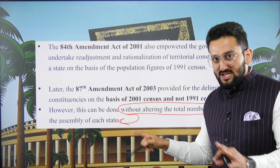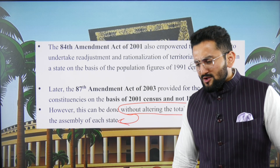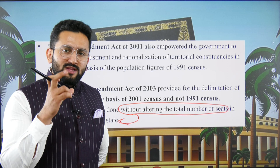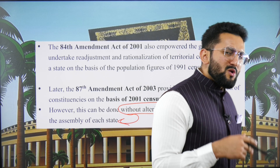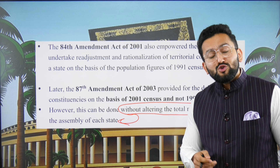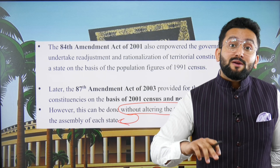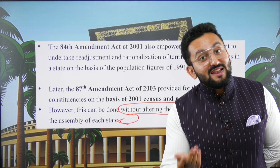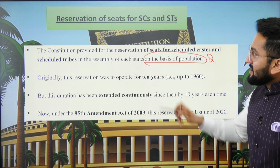The 87th Amendment Act 2003 provided for delimitation of constituencies on the basis of 2001 census instead of 1991 census. However, this can be done without altering the total number of seats in the assembly of each state. Also, if a state's seats increased, its weight in the election of the president would also increase since elected MLAs vote in presidential elections — so to prevent this disparity, total seats per state were kept unchanged.